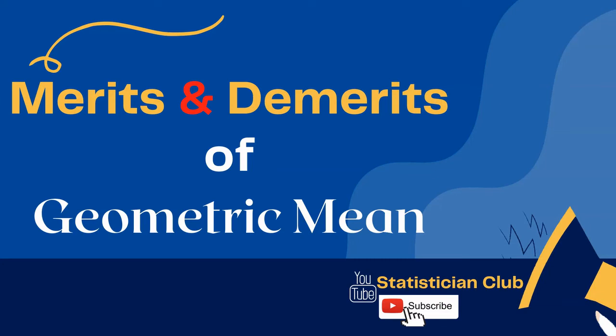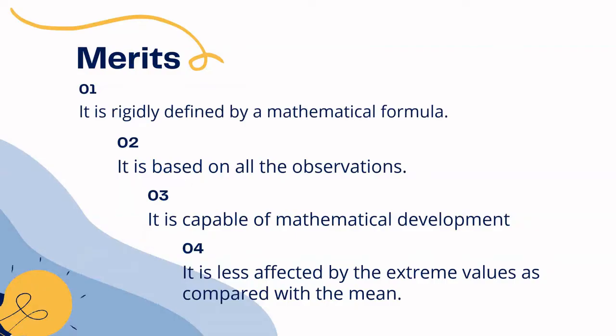In this video I explain the merits and demerits of geometric mean. First we discuss merits. Number one: it is readily defined by a mathematical formula. The formula for ungrouped data is G equals antilog of the sum of log of X divided by n, where n is the number of observations. You can define geometric mean with the help of this mathematical formula.